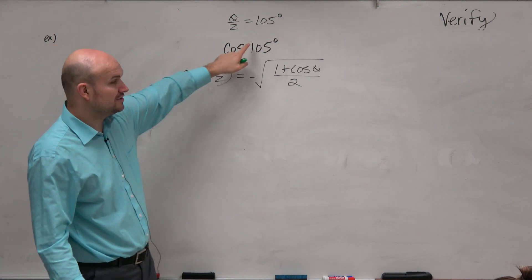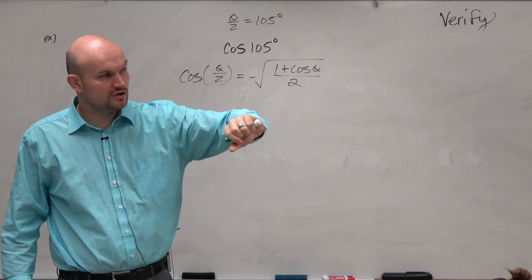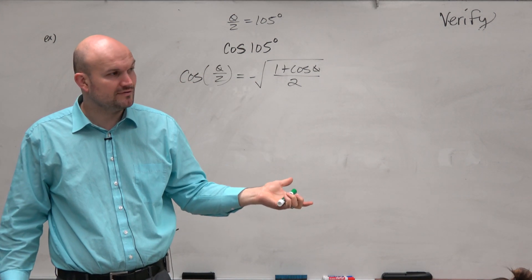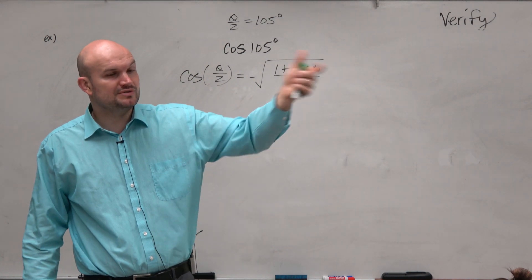In this case, our half angle is in the second quadrant. So anytime our half angle is in the second quadrant or in the third quadrant, we're going to use a negative. Anytime our half angle is in the third or the fourth, we'll use a negative for sine.